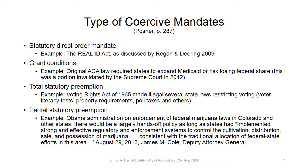Total statutory preemption is the next type, meaning that state laws are completely preempted by federal laws. Preemption from the national to the state or local level is covered by the Supremacy Clause of the Constitution, which says that federal laws are always of higher precedence than state laws.